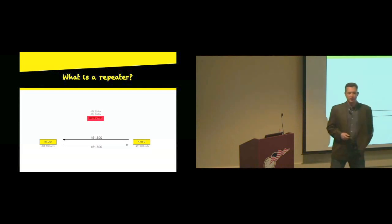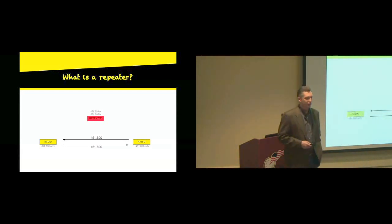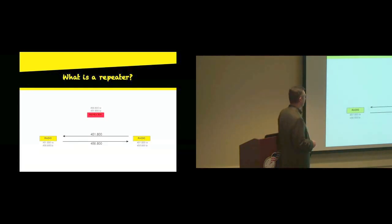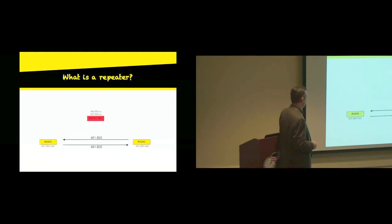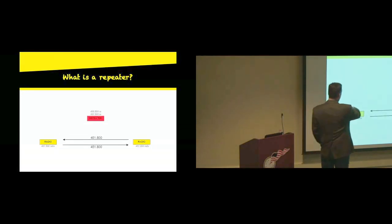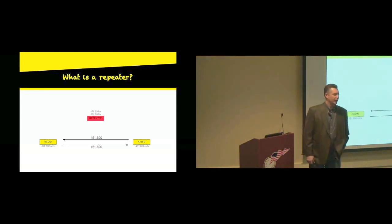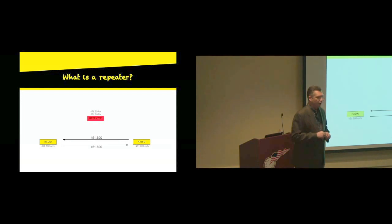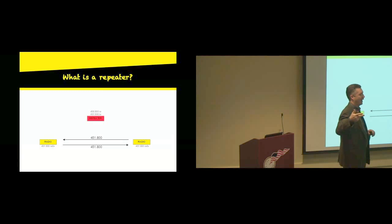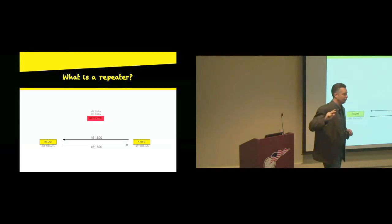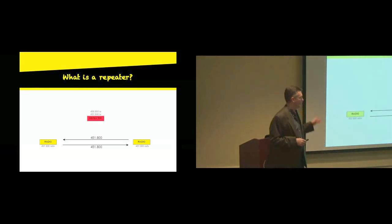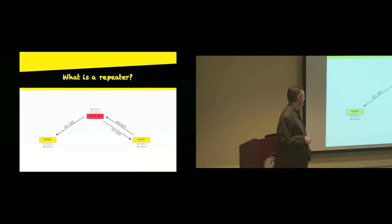Another term we throw out there is 'simplex.' All that means is the radios are talking to each other directly — you're taking that repeater out of the system. When on the repeater, you're using different frequencies for transmit and receive; on simplex, it's the same frequency. The words you'll hear are 'simplex,' 'talk around,' or 'tac' — those are the three things people use to denote that. All that means is your radios are talking to each other directly.